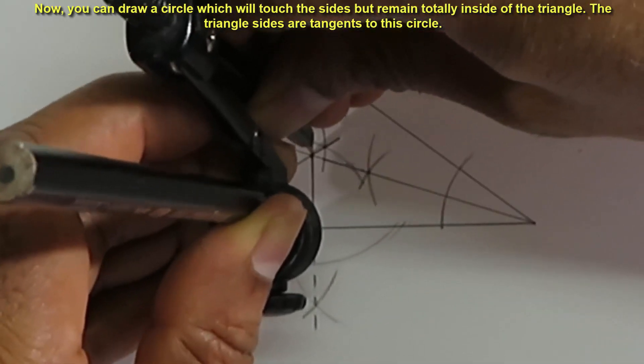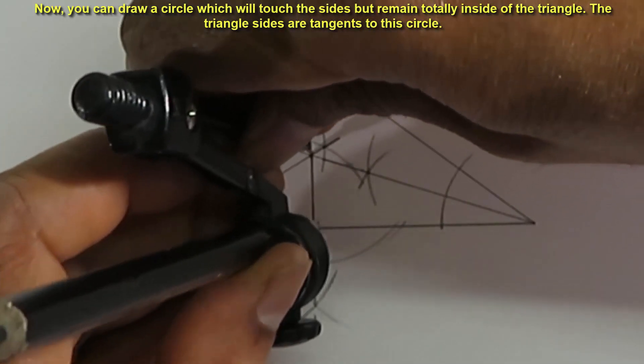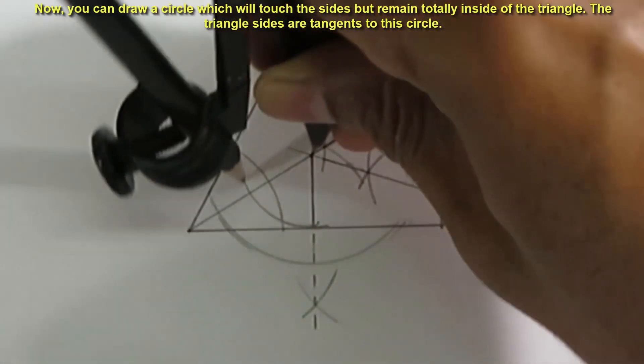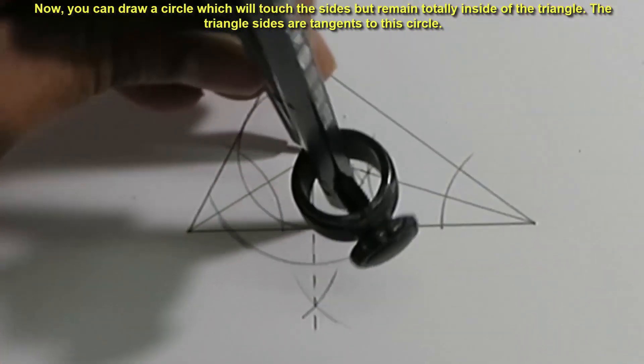Now, you can draw a circle which will touch the sides but remain totally inside of the triangle. The triangle sides are tangents to this circle.